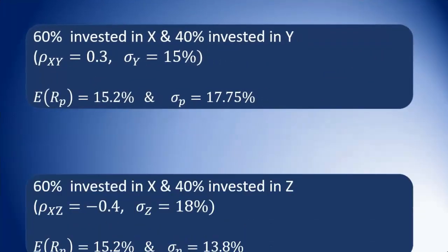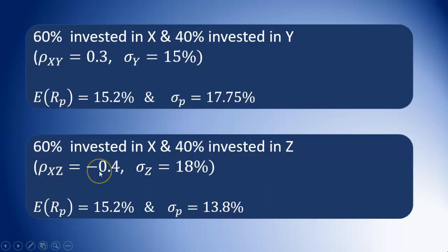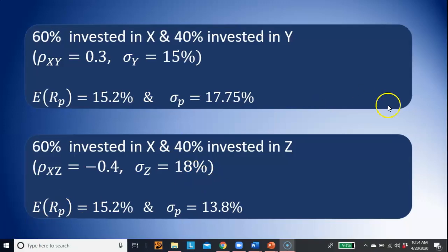So based on this, the return for both portfolios is 15.2%, but the standard deviation for the first portfolio is 17.75%, while for the second portfolio it is 13.8%. It's important to note that even though asset Y is less risky than asset Z, the correlation coefficient of negative 0.4 causes a greater risk reduction and puts the second portfolio in a better position than the first.